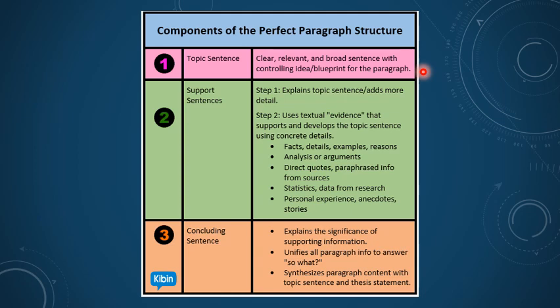Analysis and arguments — you analyze and present your point. Direct quotes or paraphrased information from sources: you can mention quotations from well-renowned personalities to support your claim or thesis statement. You can also reference statements from journals or scientific papers. Statistics and data from research — numbers and data are normally found in scientific papers. Personal experience, anecdotes, and stories are also supporting elements. All these support sentences support the main idea highlighted in the topic sentence of each paragraph.